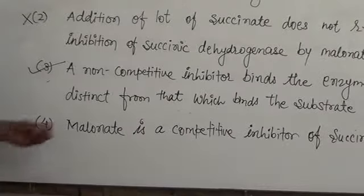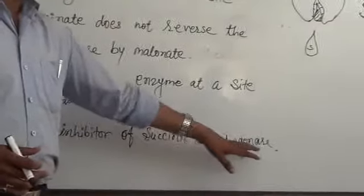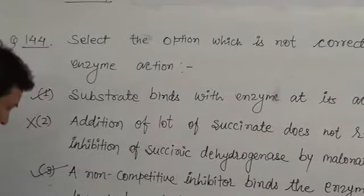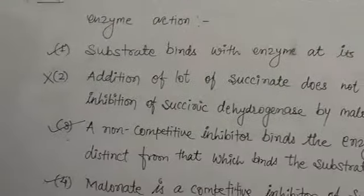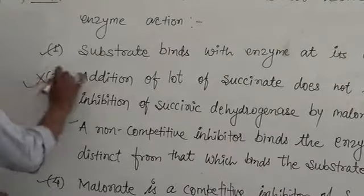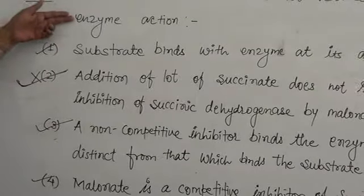Last option: Malonate is the competitive inhibitor of succinate dehydrogenase. This is accurate and true, so this option is also correct. Therefore, the answer is the second option. This is the one that is not correct with respect to enzyme action. Thank you.